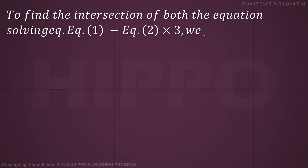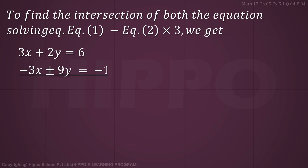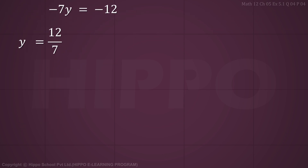Solving Equation 1 and Equation 2: multiply Equation 2 by 3 and subtract from Equation 1. We have 3x + 2y = 6 minus 3x + 9y = 18, which gives -7y = -12, so y = 12/7.